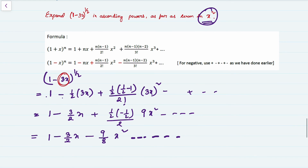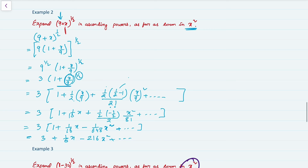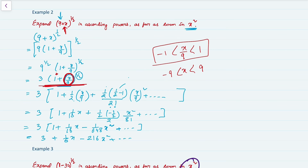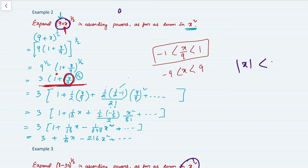For Example 3, the range is −1/3 < x < 1/3. For Example 2, you must select the second term from the simplified form where the first term is 1, so use x/9. Then −1 < x/9 < 1, and multiplying by 9 gives −9 < x < 9. You can also use the shortcut: set the second term equal to zero (9 + x = 0 gives x = −9), then use the modulus — |x| < 9 means −9 < x < 9.